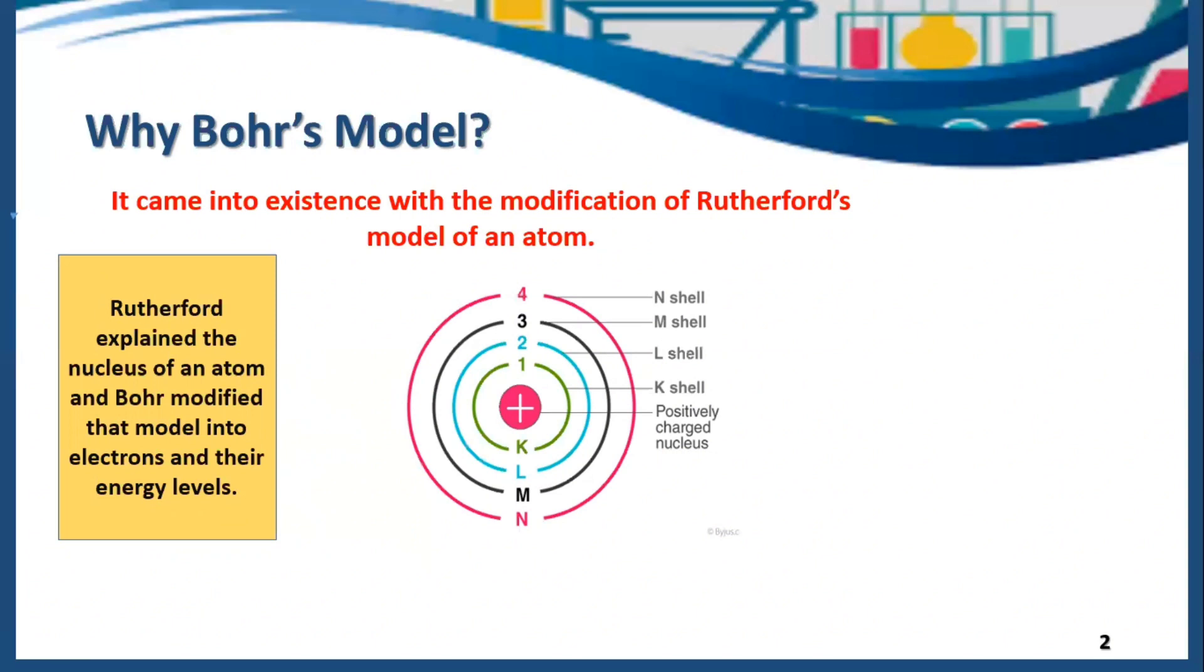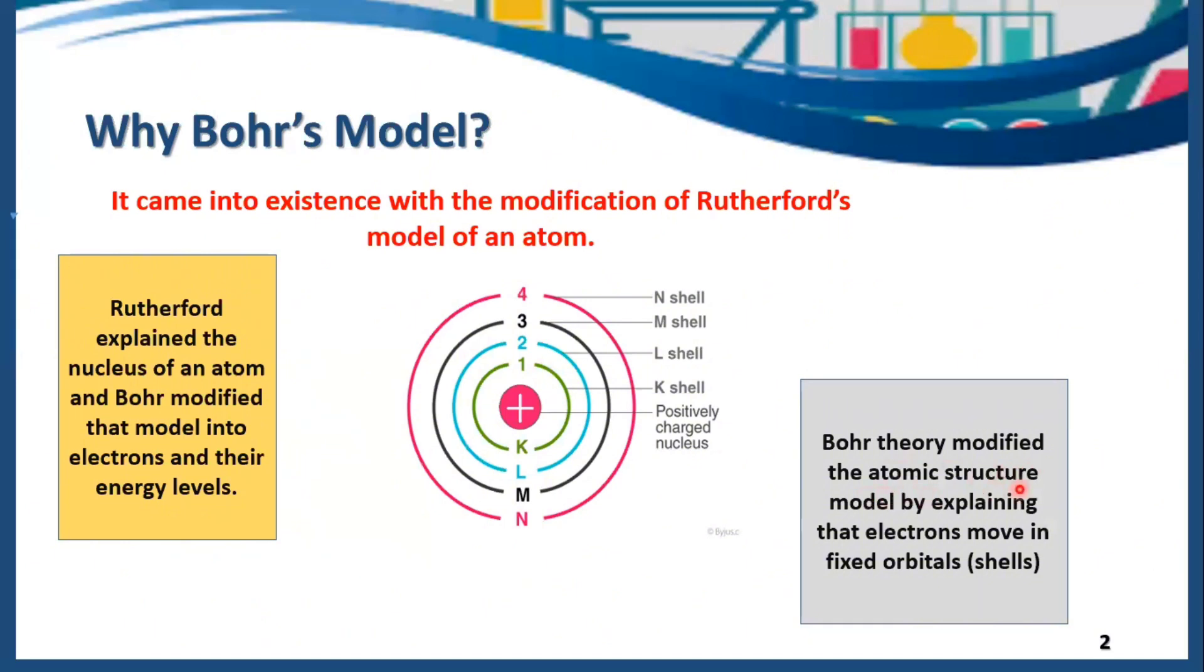Rutherford explained the nucleus of an atom and Bohr modified that model into electrons and their energy levels. Bohr's theory modified the atomic structure by explaining that electrons move in fixed orbitals or shells. He explained that each orbit or shell has their own fixed energy.